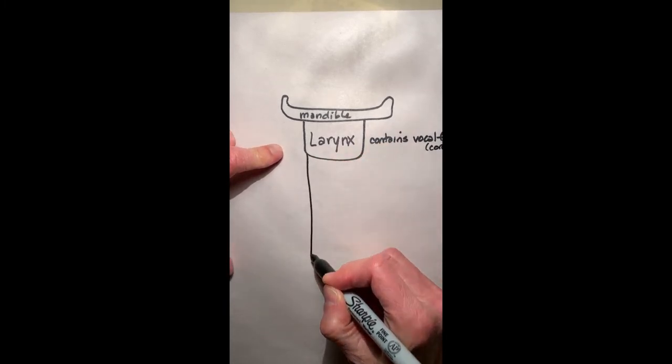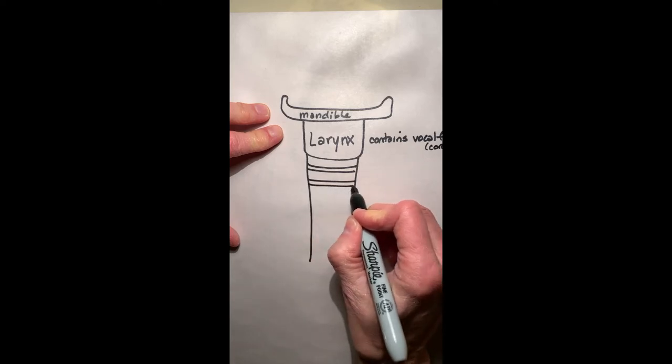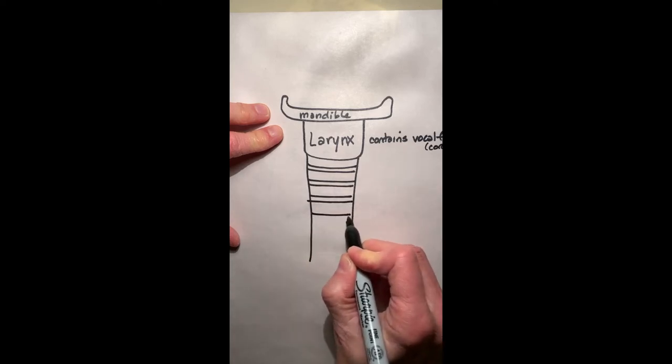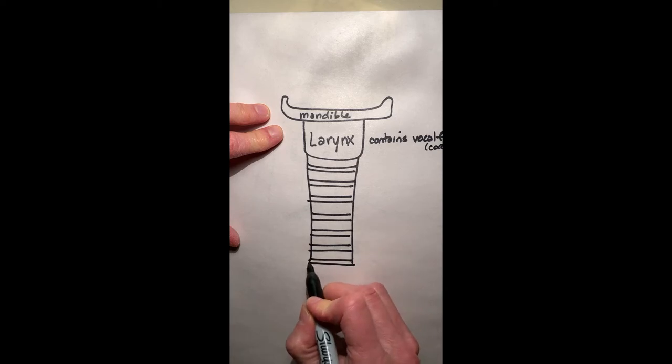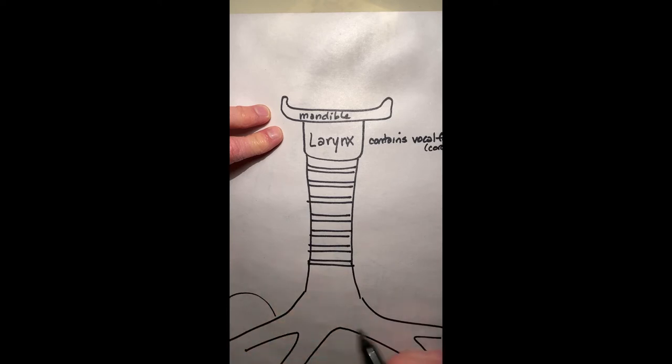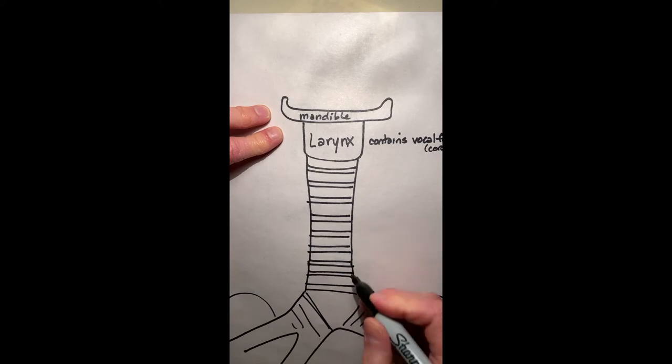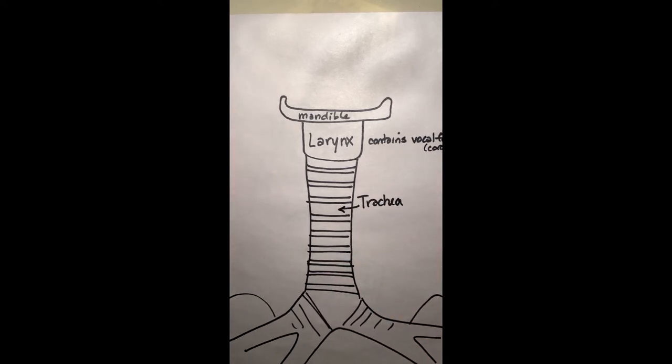So the larynx is going to become the trachea. And the trachea has these cartilaginous rings that keep it open. They support it at all times. It's not muscle. So I'm going to go on down here and then it starts to bifurcate. I'm missing one here. But it's going to go into the lungs as you already have figured out. And so on and so on. Okay, so this is the trachea.